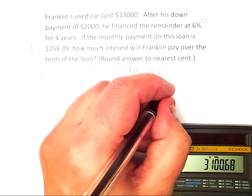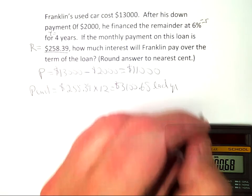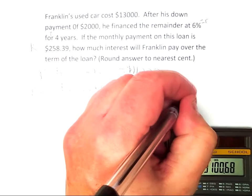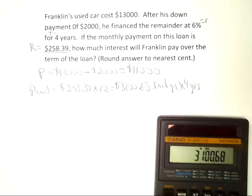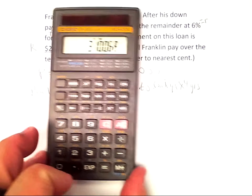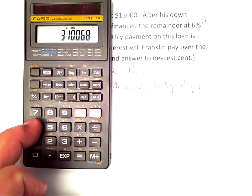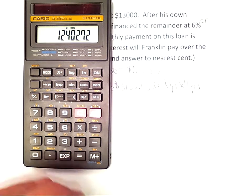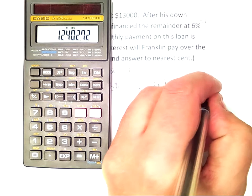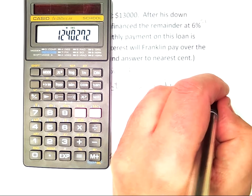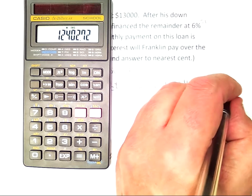That's $3,100.68 each year, but it's a four-year loan. So you've got to multiply that by four years. Taking that number and multiplying it by four, I end up with $12,402.72.